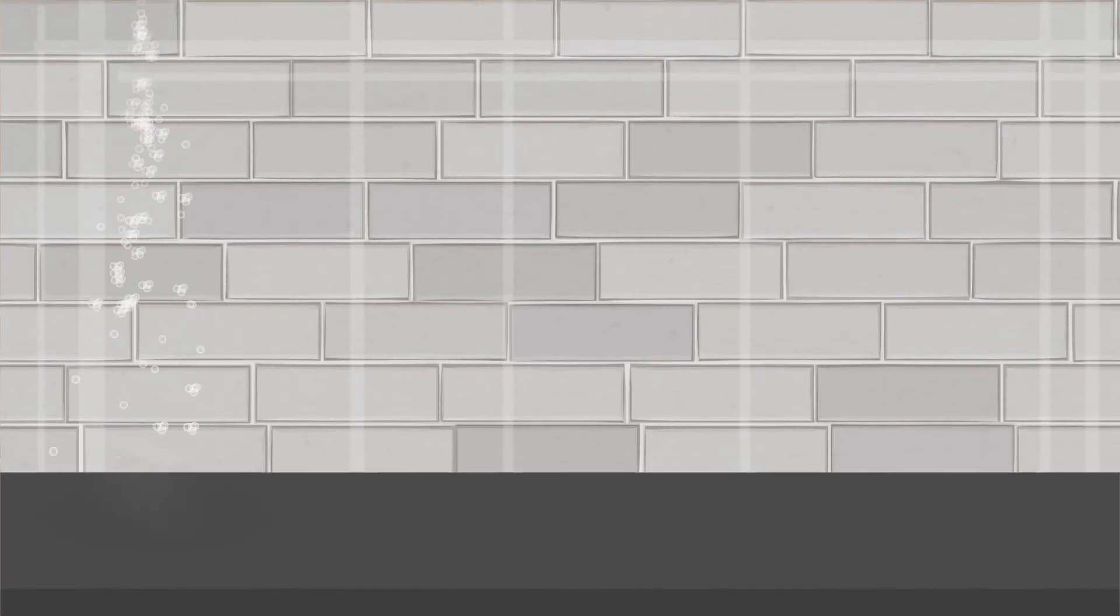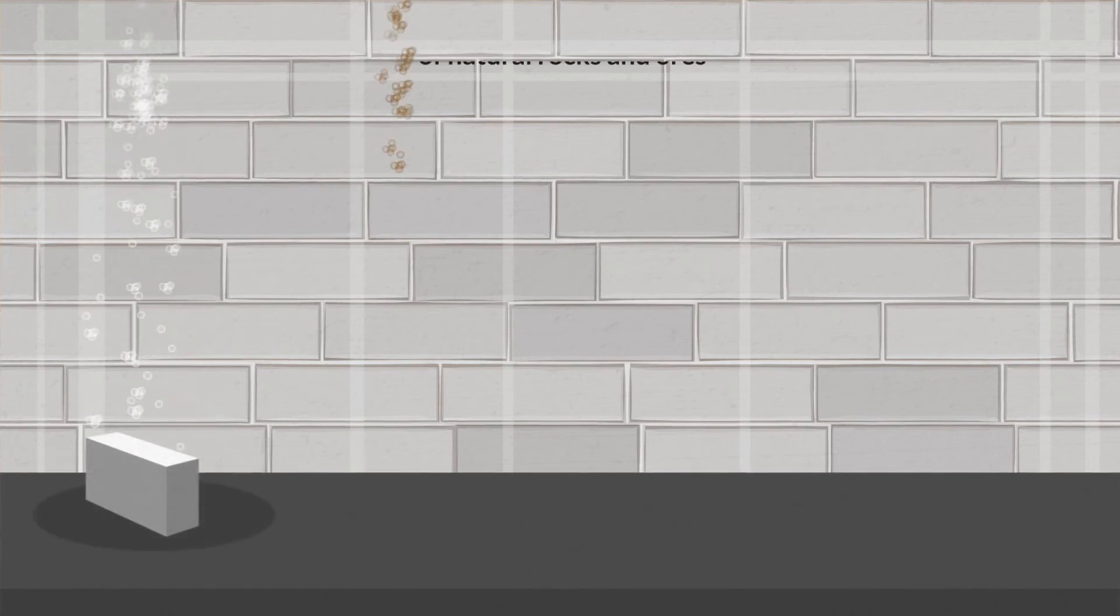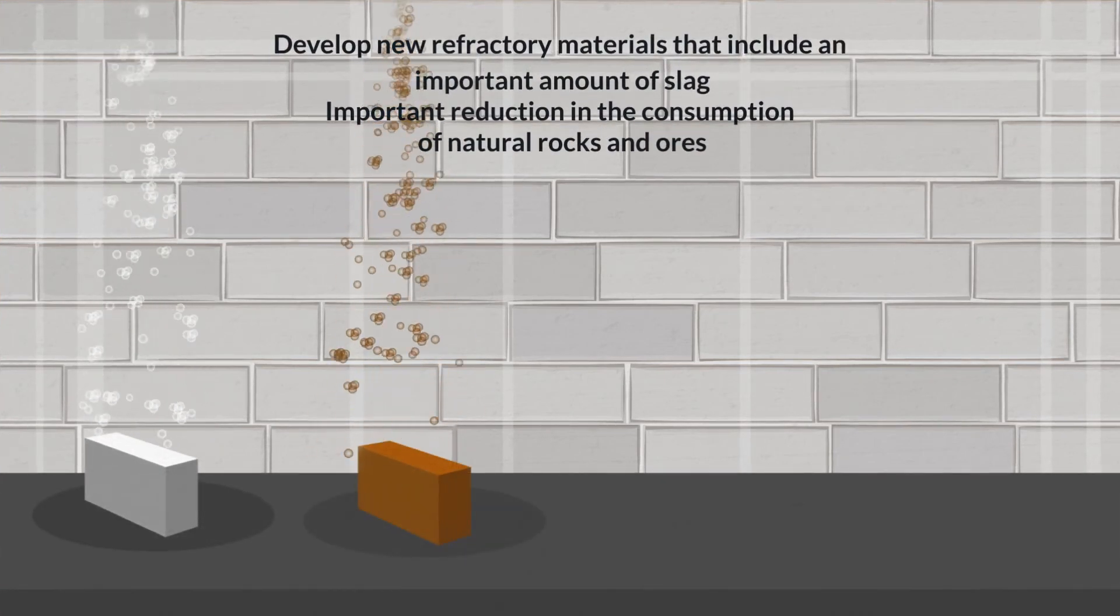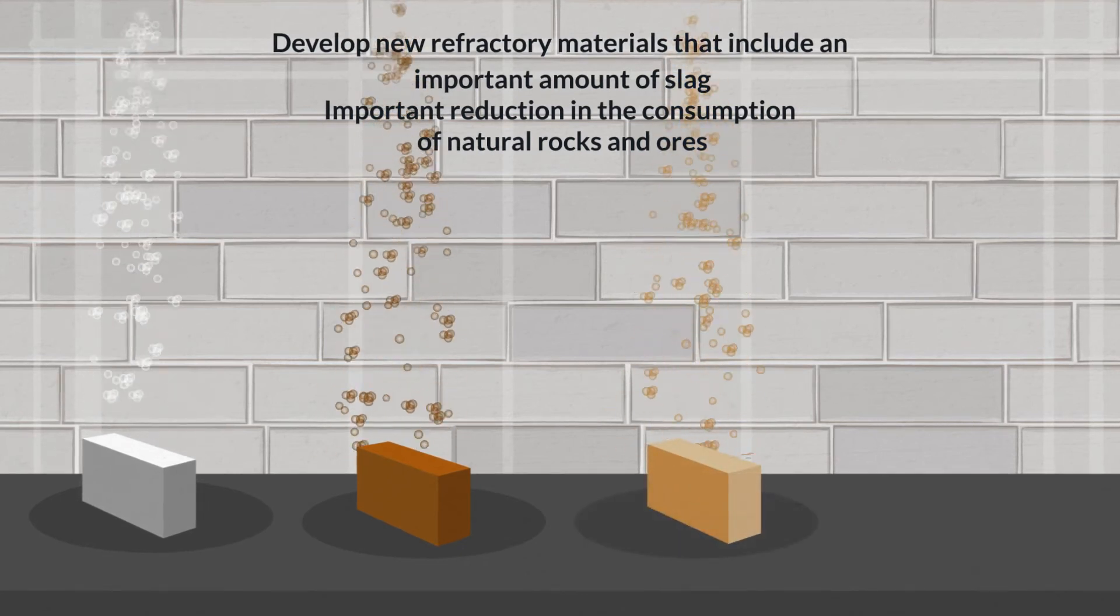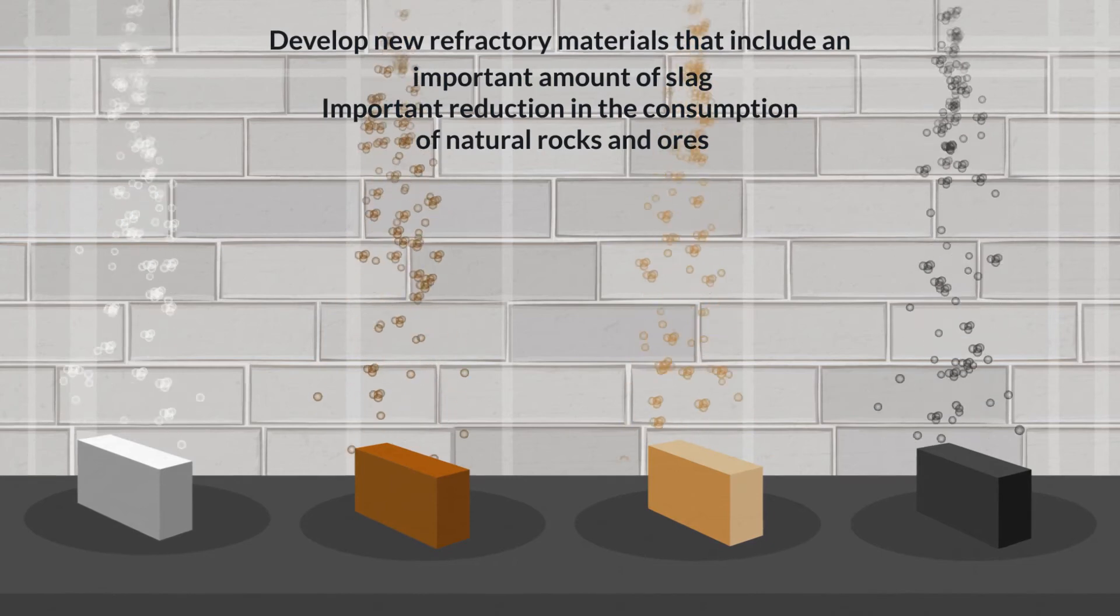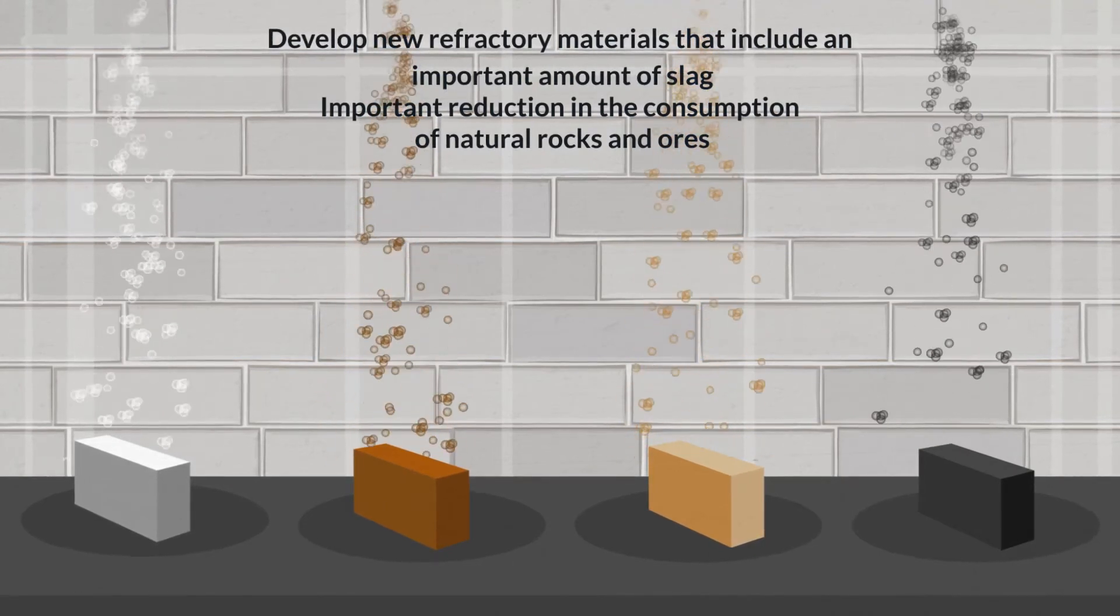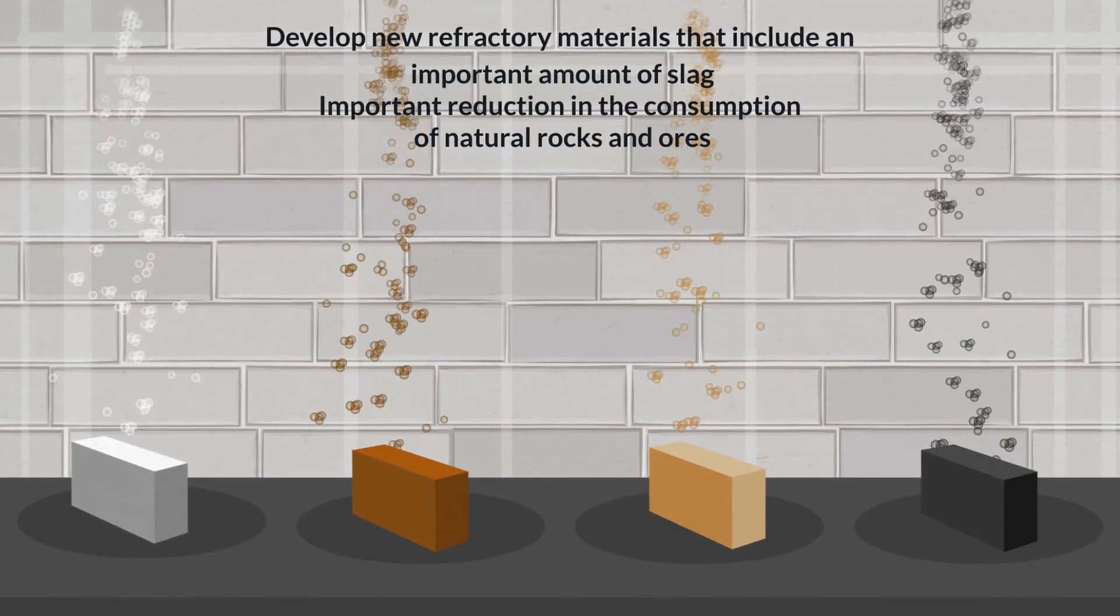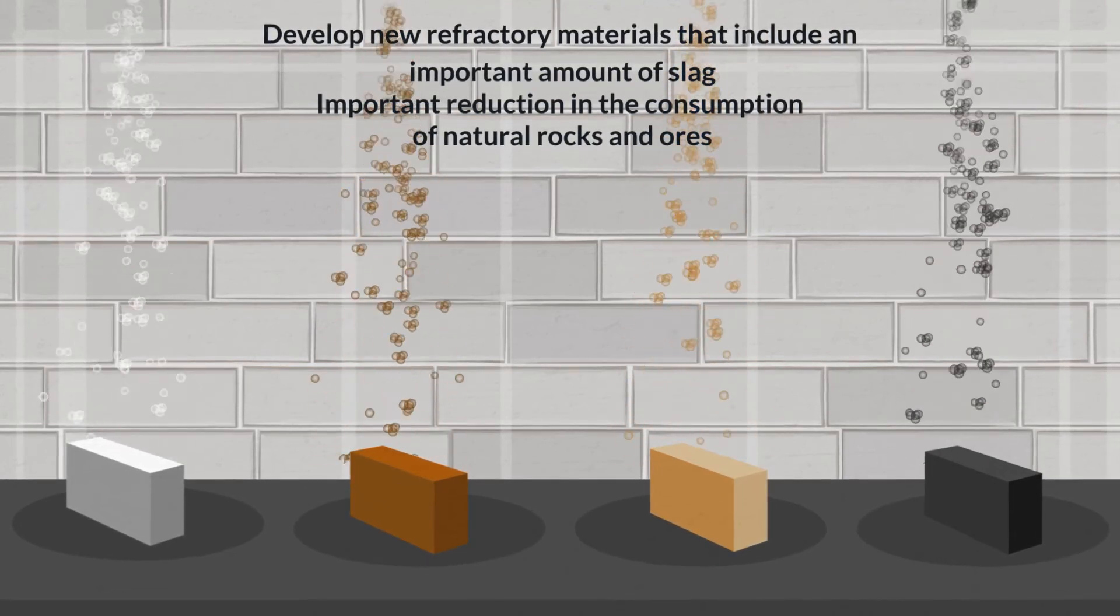As feedstock for refractory material production, this type of materials are widely used in high-temperature industrial processes. The aim is to develop new refractory materials that include an important amount of slag in their composition. By accomplishing this objective, an important reduction in the consumption of natural rocks and ores would be achieved.